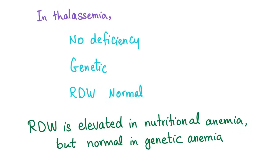However, thalassemia is a genetic disease — there is no deficiency. So there is no gradual deterioration of bone marrow production. The RDW is normal because the problem exists from the beginning. Nothing is decreasing; it's not a gradual iron deficiency. It's genetic, so RDW is normal.